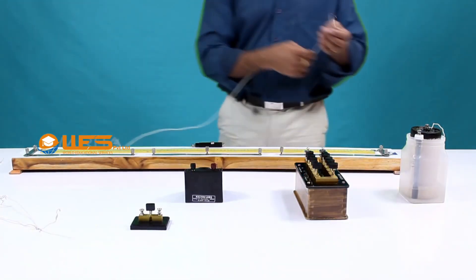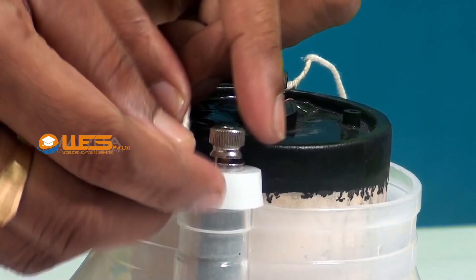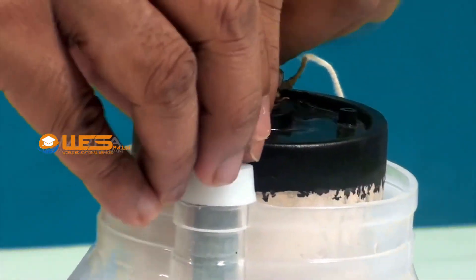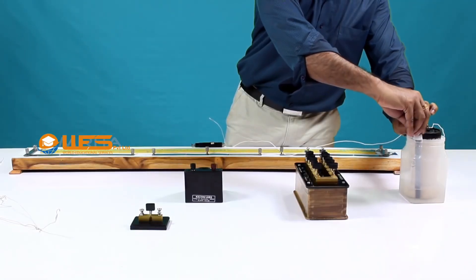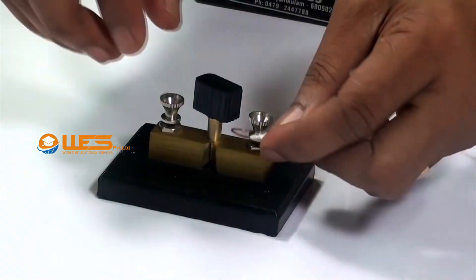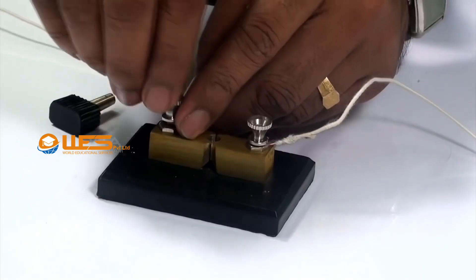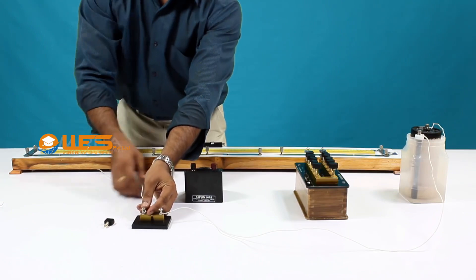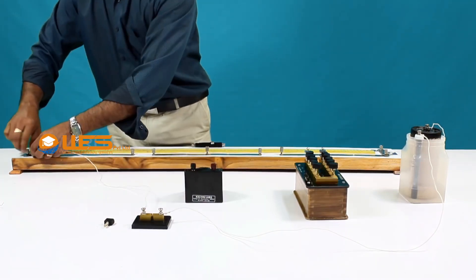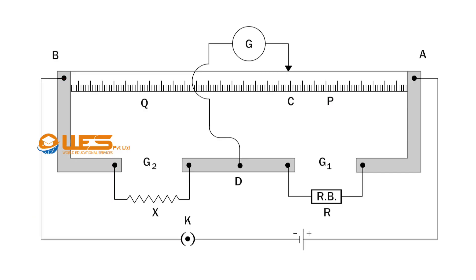Take another connecting wire and connect it between the negative terminal of the leclanch cell and one end of the key. The other end of the key is connected to terminal B of the meter bridge with another connecting wire.